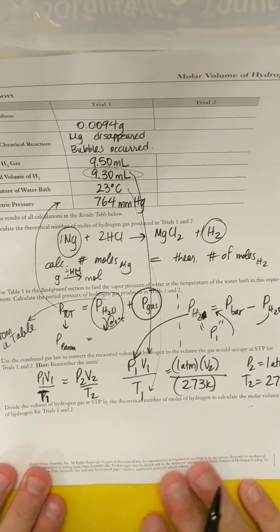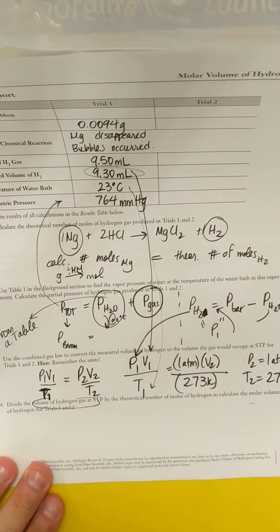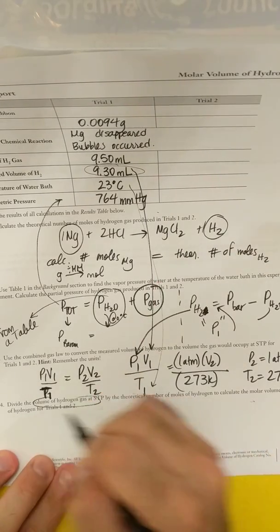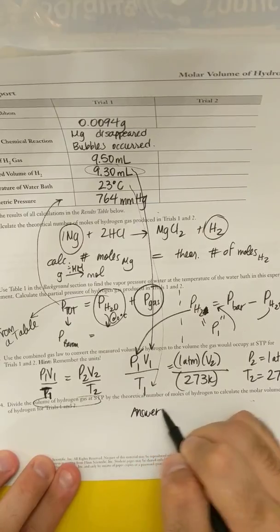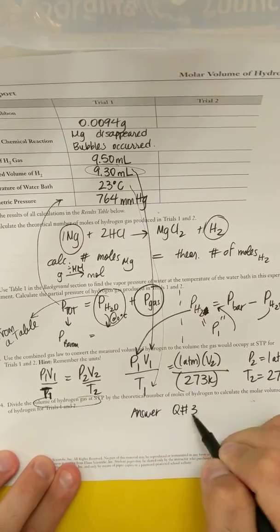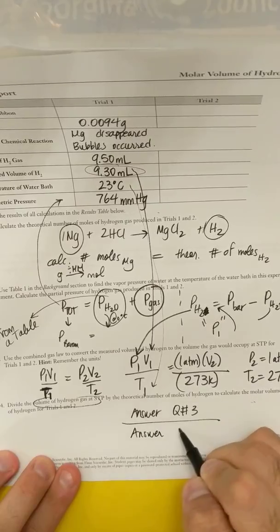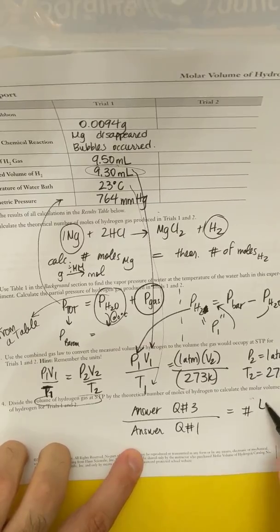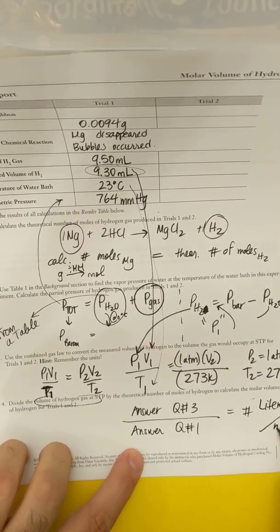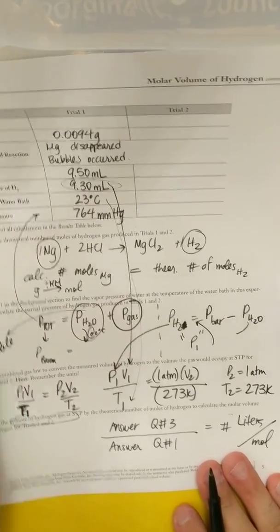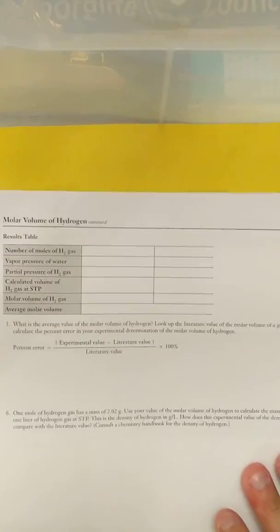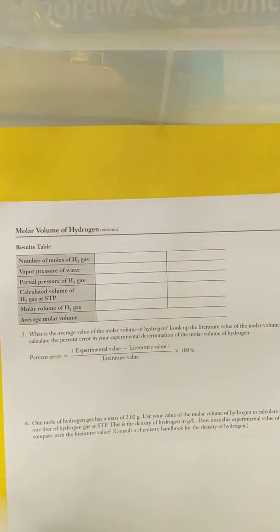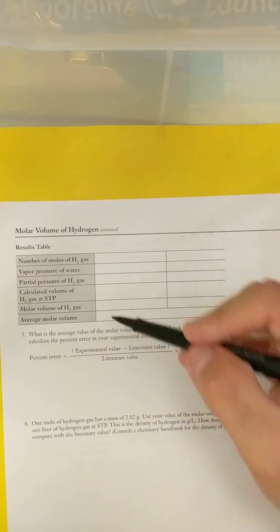And then it says divide the volume of hydrogen gas you get in number 3 by the theoretical moles. So basically, for question 4, it's your answer to question 3 divided by your answer to question number 1. And that's going to be a number in liters per mole. Then, to continue on, you could fill in this data table with your resulting calculations. All of the calculations that you get in these steps are going to go in this data table.